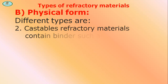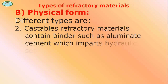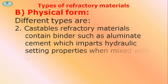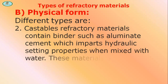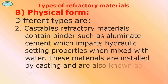Castable refractories contain binders such as aluminum cement, which impart hydraulic setting properties when mixed with water. These materials are installed by casting and are also known as refractory concretes.